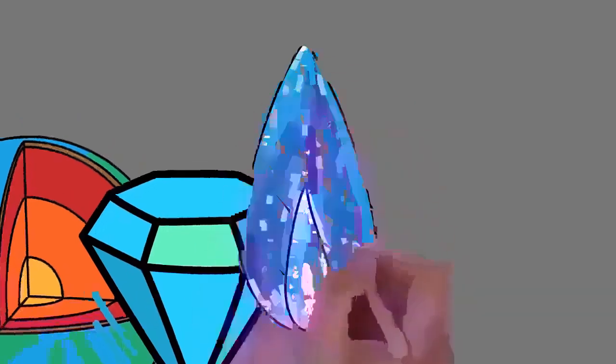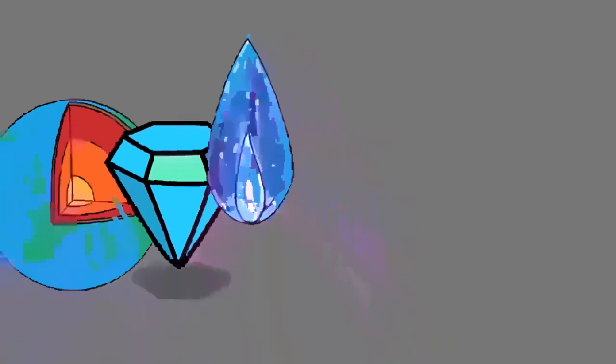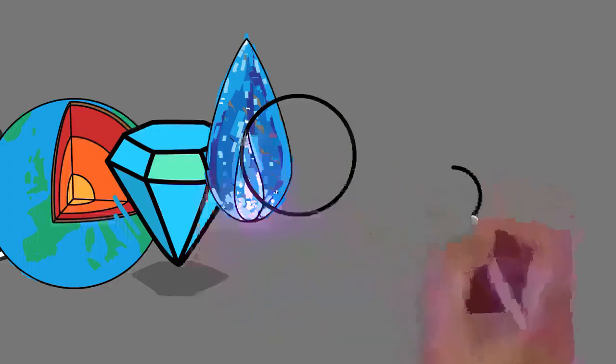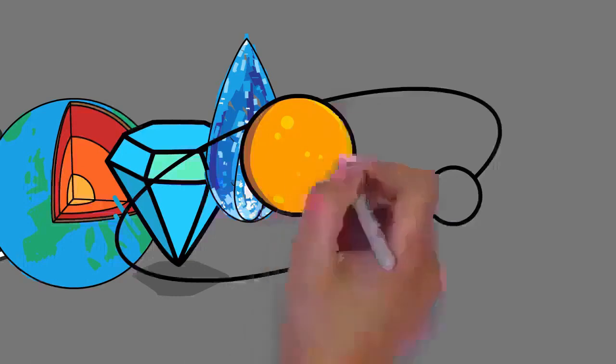Earth is about eight light minutes away from the sun and orbits it, taking a year, about 365.25 days, to complete one revolution. Earth rotates around its own axis in slightly less than a day, in about 23 hours and 56 minutes.